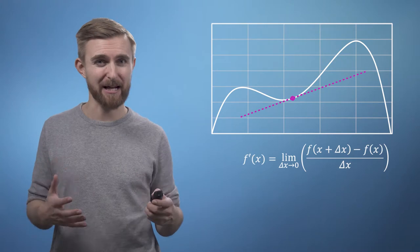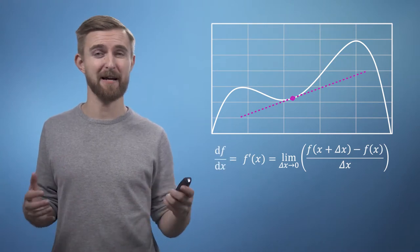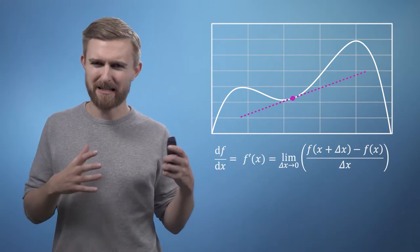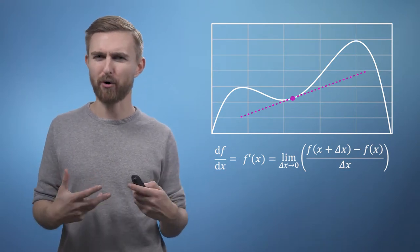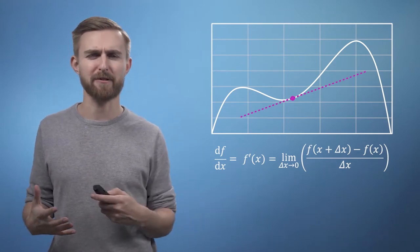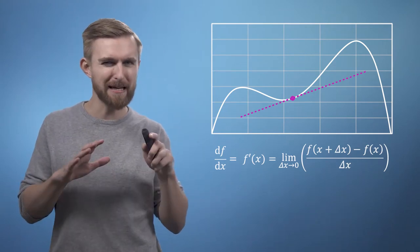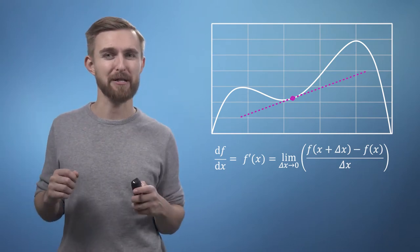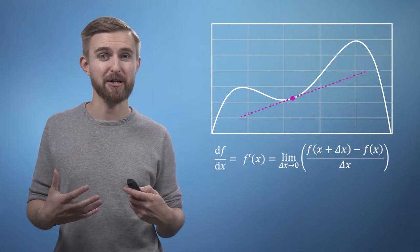Which we write as f dash of x, or df by dx, depending on which notation scheme you prefer. This is a slightly strange concept, as we're not talking about delta x equals zero, as dividing by zero is not defined, but instead just when delta x is extremely close to zero.